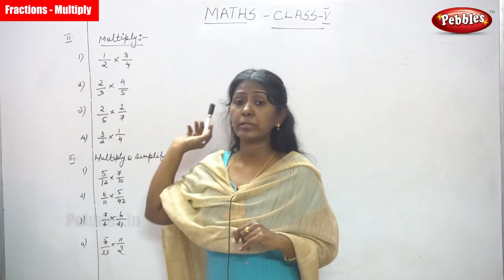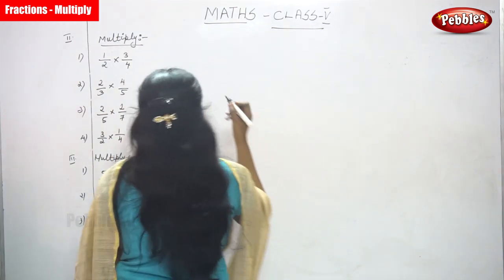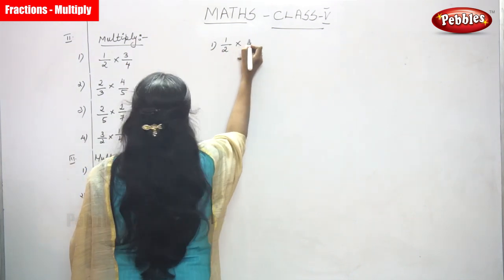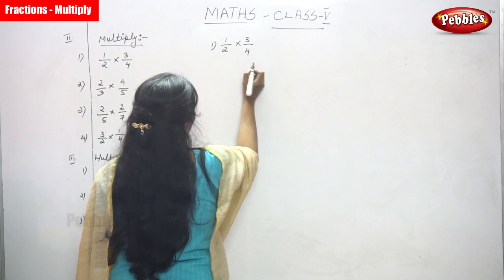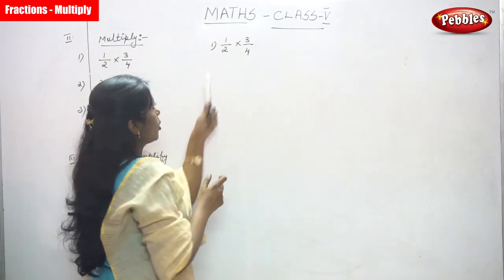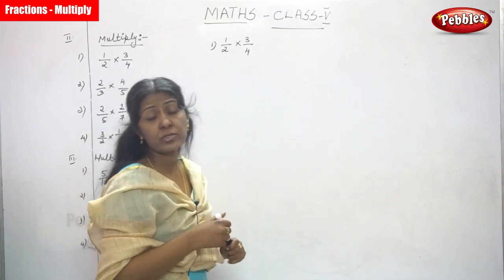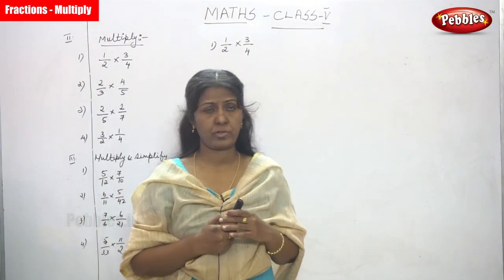First sum: 1 by 2 into 3 by 4. So, let's solve the sum. First sum 1 by 2 into 3 by 4. Look at the number. First question is 1 by 2 is a fraction. The next is also 3 by 4. It is also a fraction. It is a what kind of fraction? It is both a proper fraction.